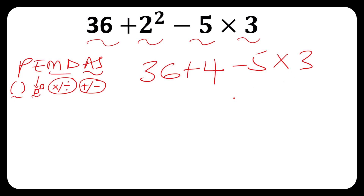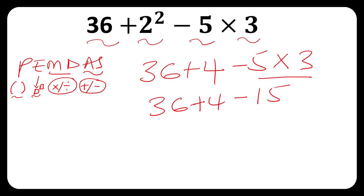All right, the next step is multiplication and division. Do we have any multiplication sign? Yes, so 5 times 3 gives us 15. That leaves 36 plus 4 minus 15. Now addition and subtraction — same precedence, so we start on the left: 36 plus 4 equals 40, minus 15.